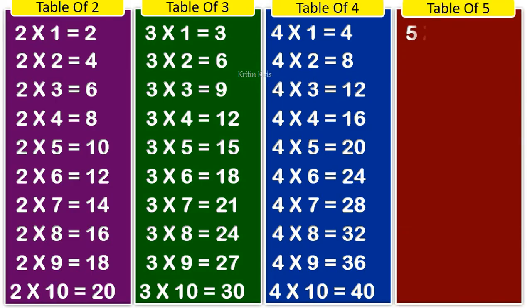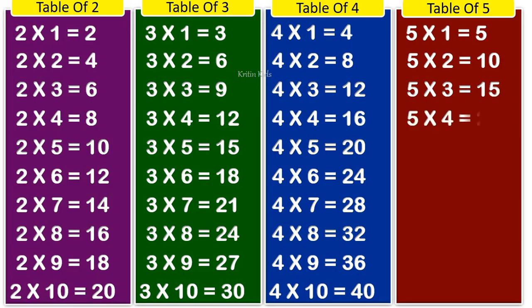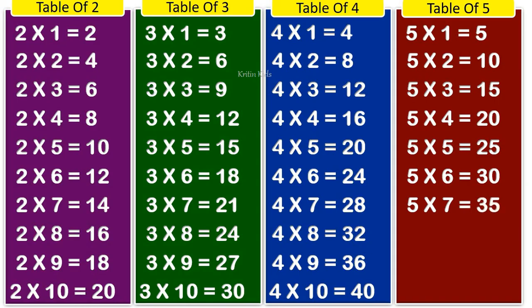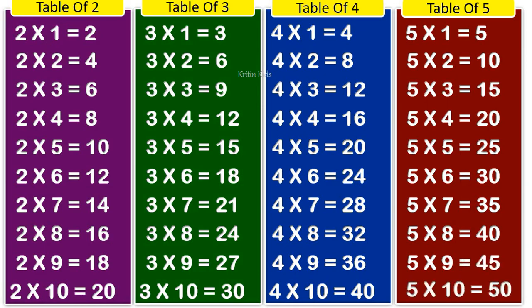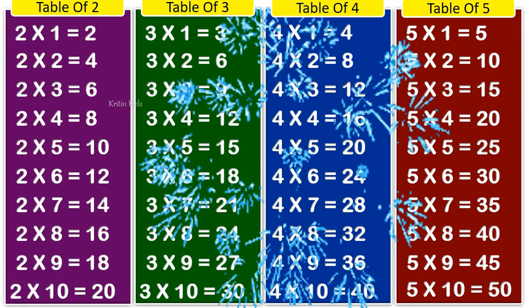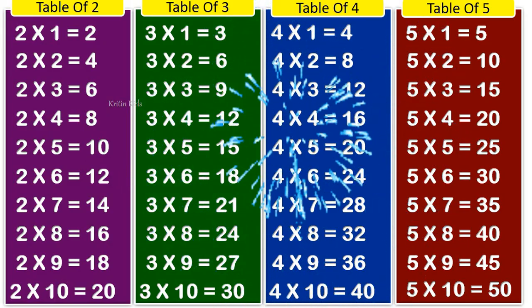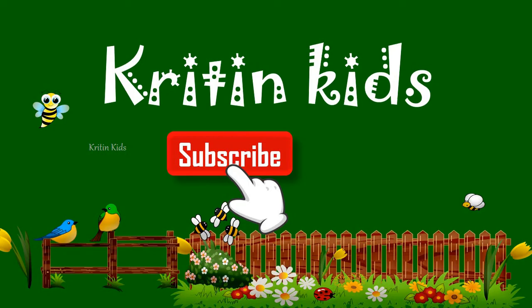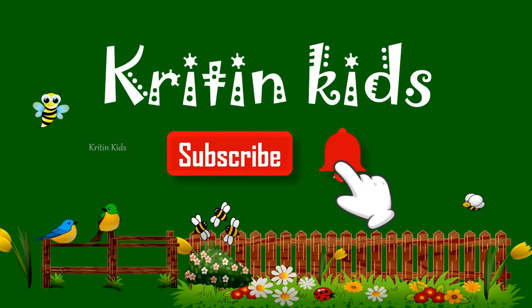Table of five. 5 1s are 5, 5 2s are 10, 5 3s are 15, 5 4s are 20, 5 5s are 25, 5 6s are 30, 5 7s are 35, 5 8s are 40, 5 9s are 45, 5 10s are 50.